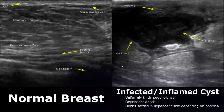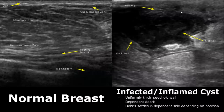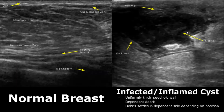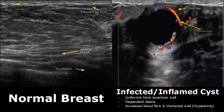Here we have a case of infected and inflamed cyst. It has thick isoechoic walls and dependent debris — meaning this debris will settle down due to gravity on the gravity-dependent side and will move in accordance with the patient position. Using this feature we can differentiate it from a mural nodule. Another feature is seen on Doppler: the presence of increased blood flow in the thick wall.